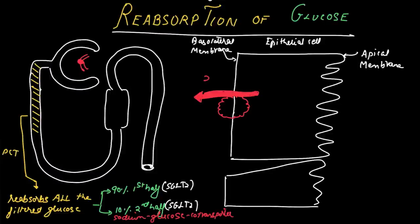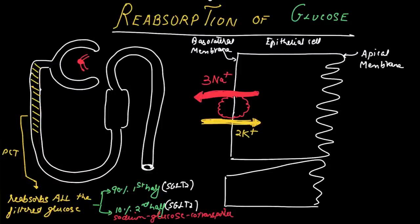This is known as primary active transport — active because ions are pumped against the concentration gradient, and primary active because integral membrane proteins known as ion pumps use energy in the process of transport itself. Therefore it is called primary active transport.